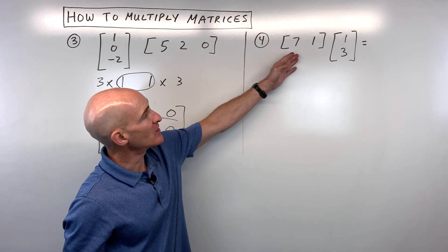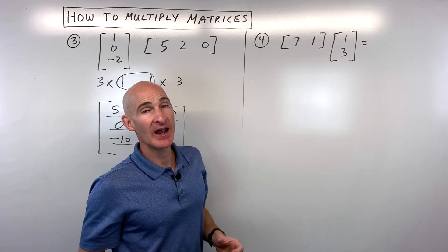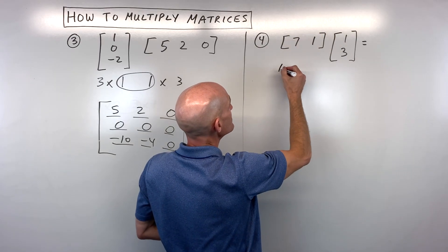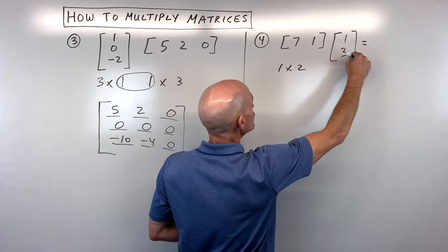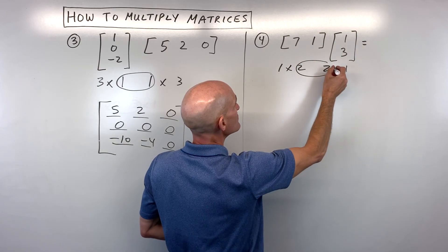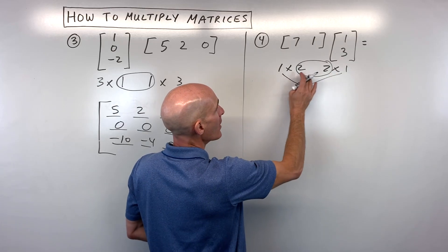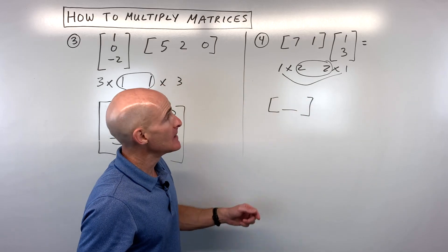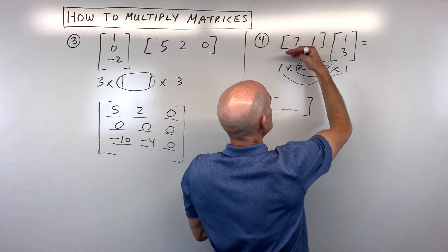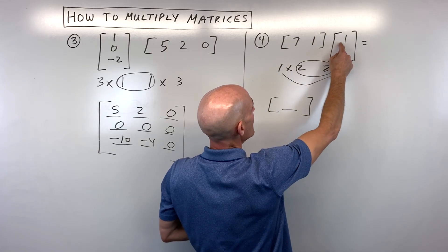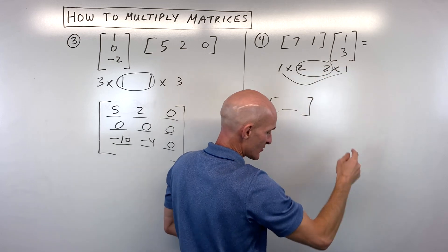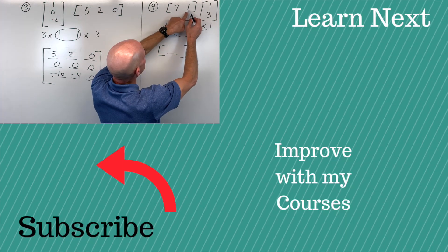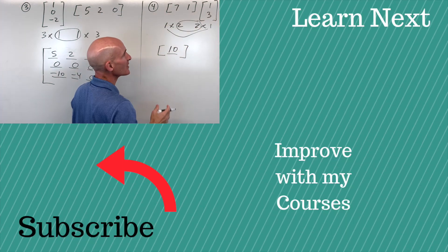For number four — what are the dimensions? We have one row and two columns, so that's a one by two. The second matrix has two rows and one column. The inner dimensions match, so we end up with a one by one — just a single element. First row times the first column: seven times one is seven, plus one times three is three. Add those together and we get ten.